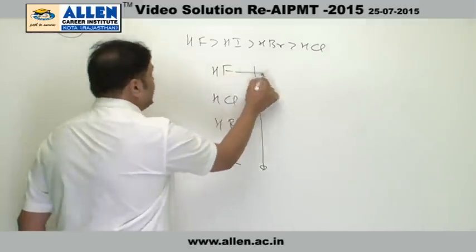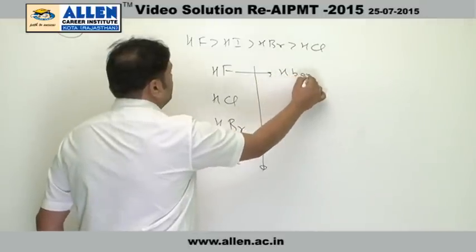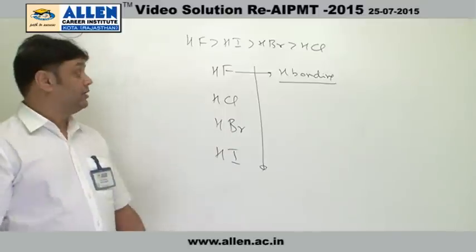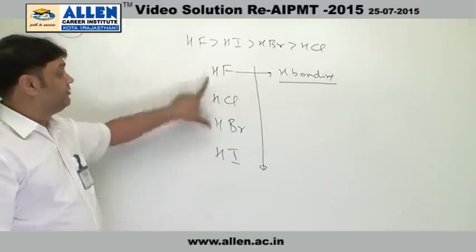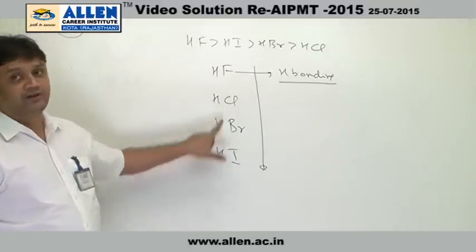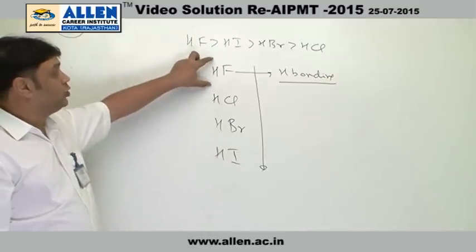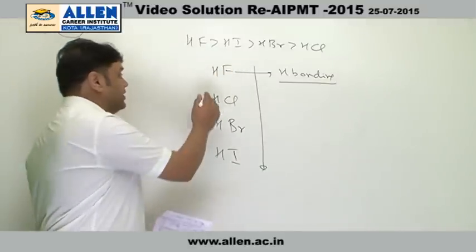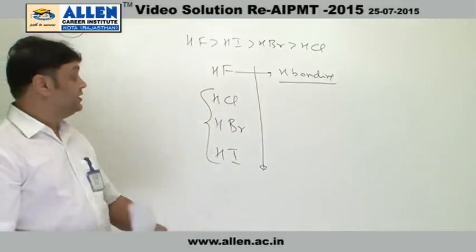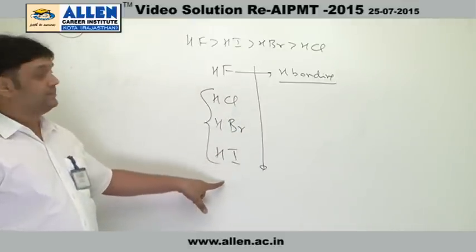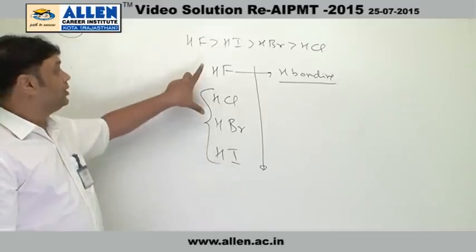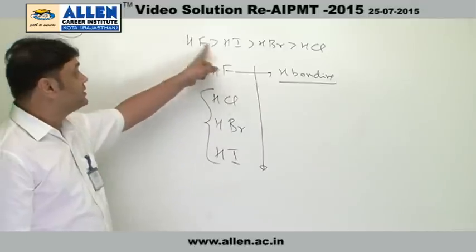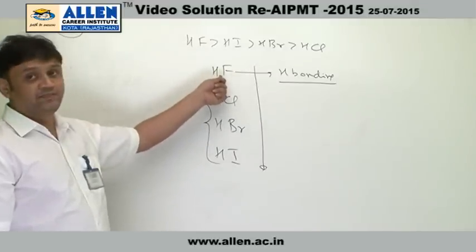But in HF there is H-bonding, and the H-bonding will play the dominating role here and will outweigh the effect of molecular weight in the other compounds. That is why HF will show the highest boiling point in this sequence. The others, since they do not have any H-bonding, their boiling point order comes from molecular weight. The order of boiling points is due to the H-bonding effect in HF.